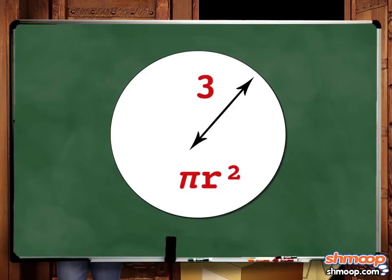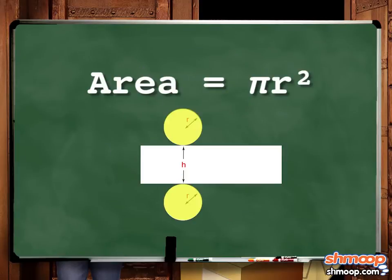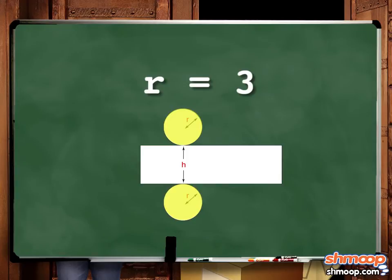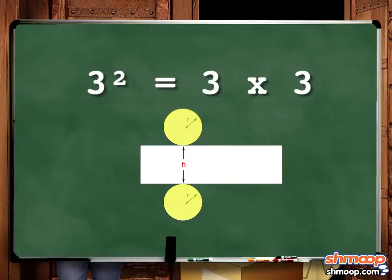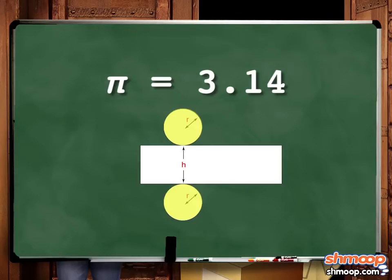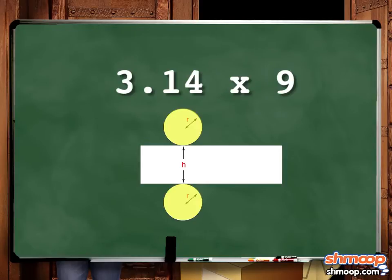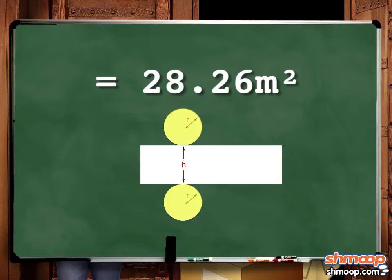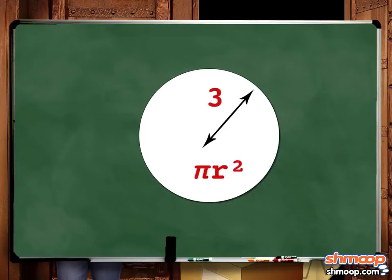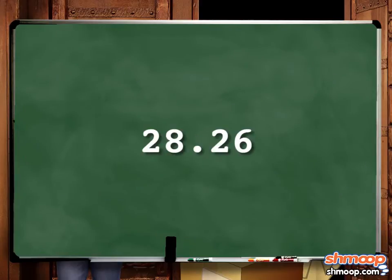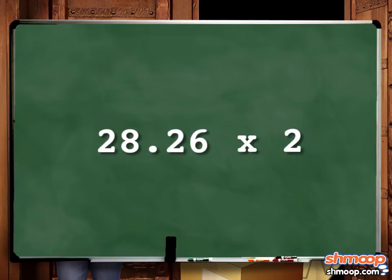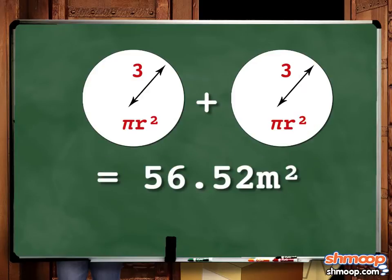First we'll need to find the area of each of those circles. The formula for finding the area of a circle is pi times the radius squared. Our radius is 3, so our formula will be pi times 3 squared. 3 squared is 3 times 3, or 9. Pi is approximately 3.14, so 3.14 times 9 is 28.26. We have two circles, so we'll need to double that number — 28.26 times 2 is 56.52.